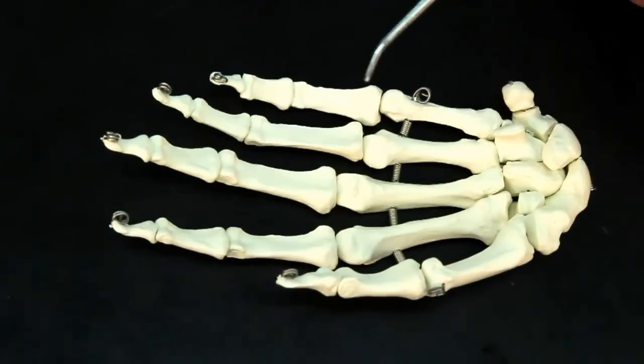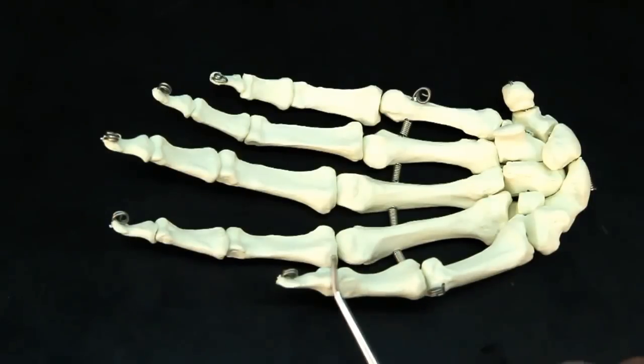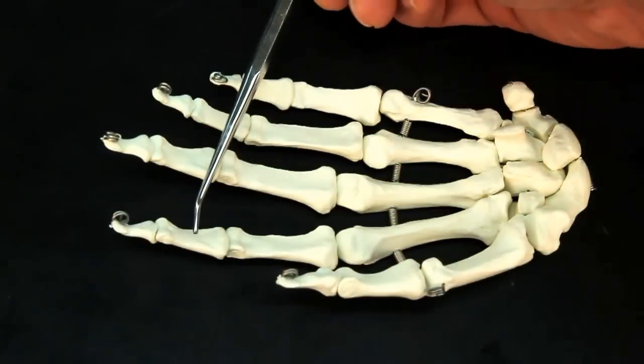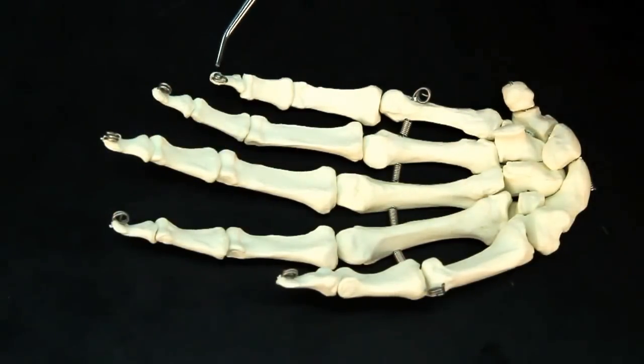After that, you have 14 phalanges. The thumb has a proximal and distal phalange, while the other four fingers have proximal, middle, and then distal phalanges.